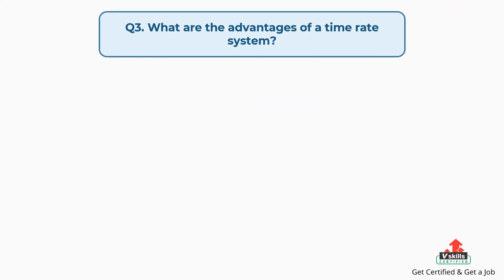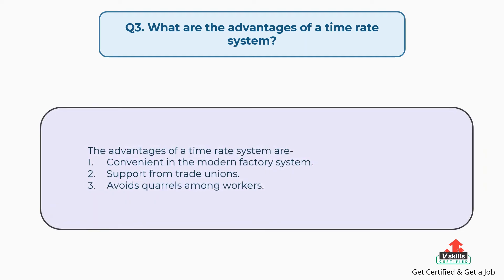Question number three: What are the advantages of a time rate system? The answer is, the advantages of a time rate system are: convenient in the modern factory system, support from trade unions, and avoids quarrels among workers.